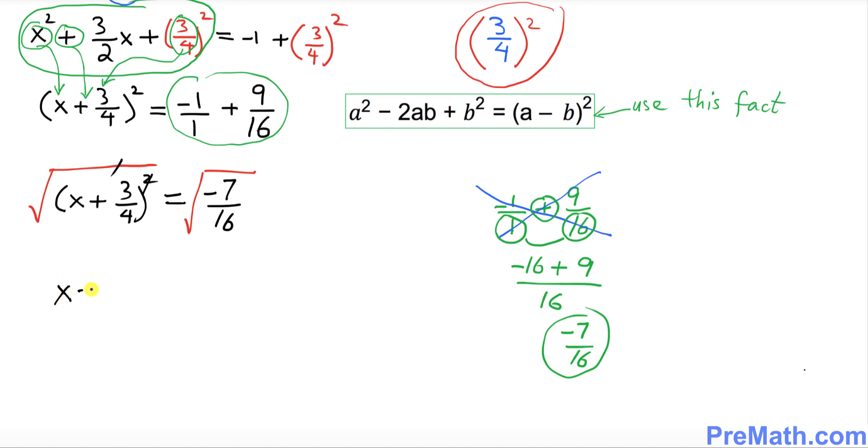We got x plus 3 over 4 equals to, I can break this one, split them up. I'm gonna put down positive or negative sign outside, negative 7 on the top, divided by the square root of 16 on the bottom.